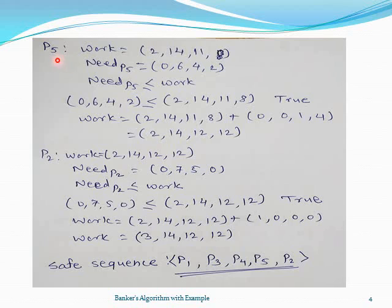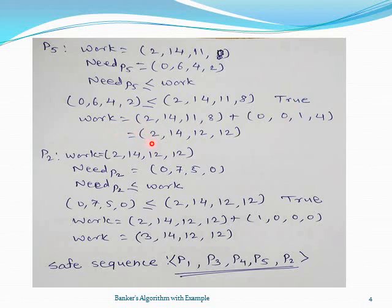In the same way, we check for process P5. The modified value of work is [2, 14, 11, 8]. The need of P5 is [0, 6, 4, 2]. We compare the need of P5 with work — this becomes true. So we modify the work value, which becomes [2, 14, 12, 12]. P5 is added to the safe sequence.